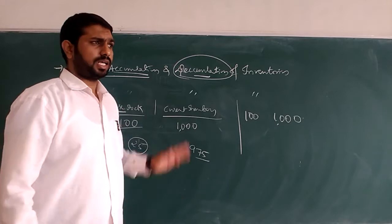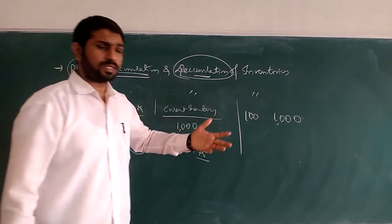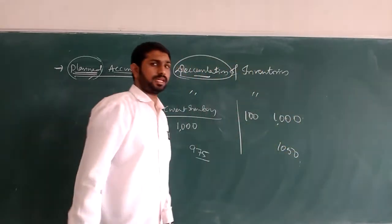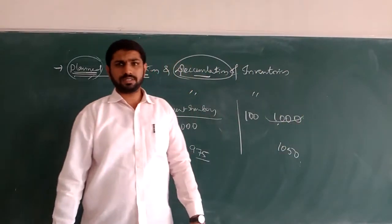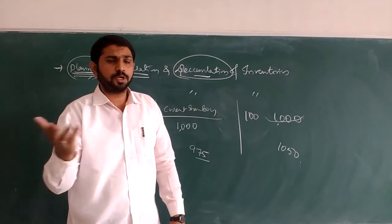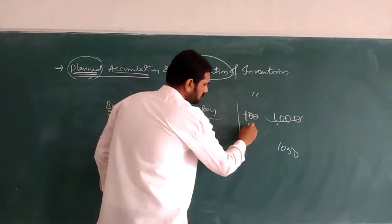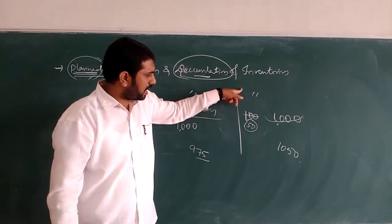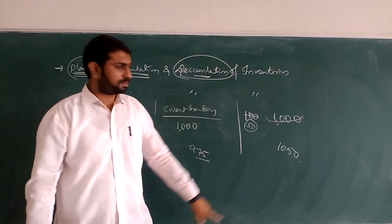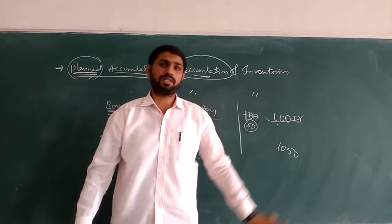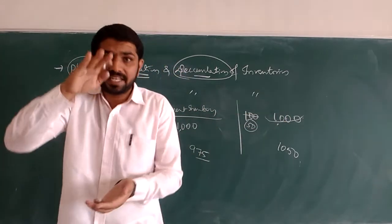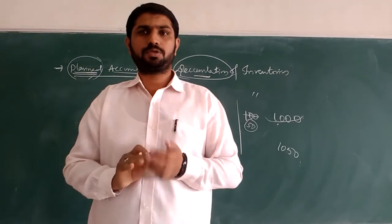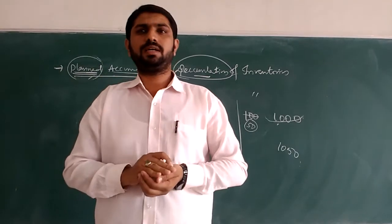Out of the 1000, if sales have been increased more than 1000 — for example, sales reached 1050 — then it means you have sold the entire 1000 shirts, and the remaining 50 you have taken from the base stock. So the base stock has decreased from 100 to 50 because the present sales increased from 1000 to 1050. This decrease in stock is called decumulation of inventory.